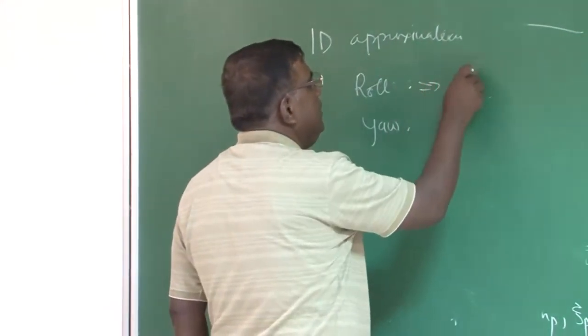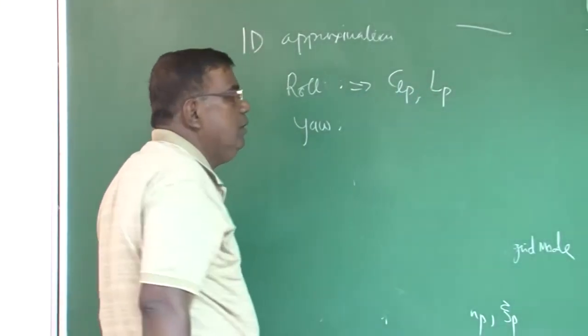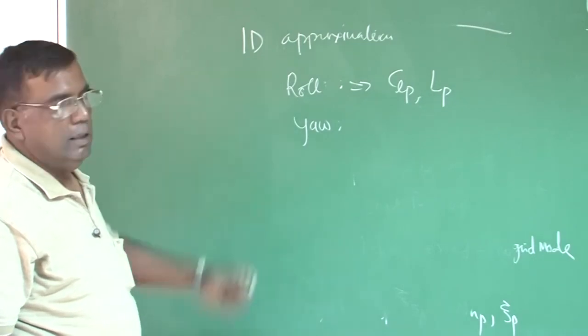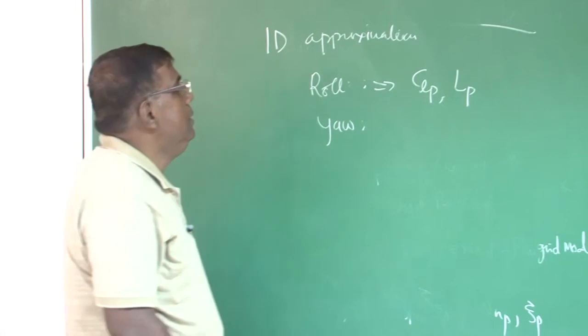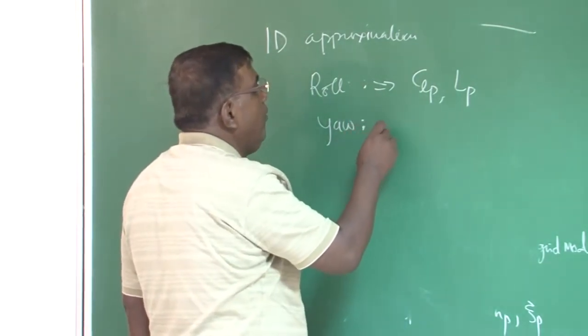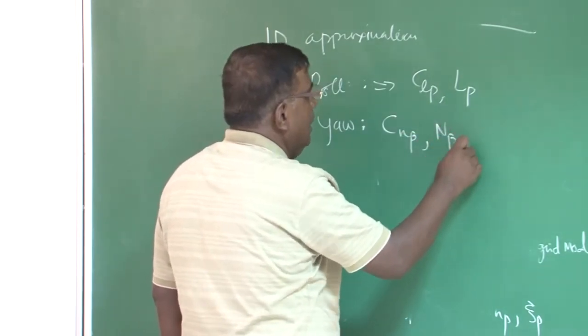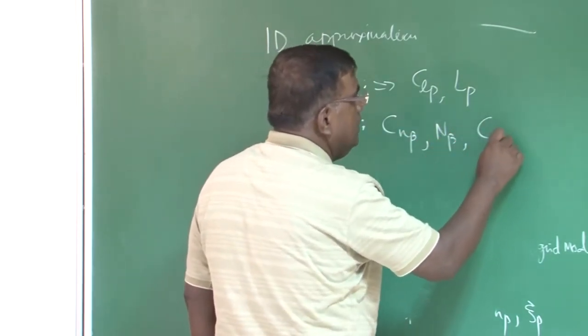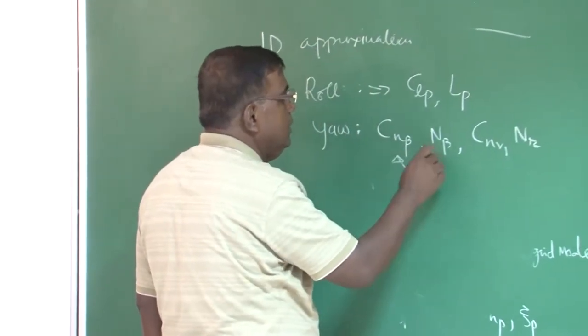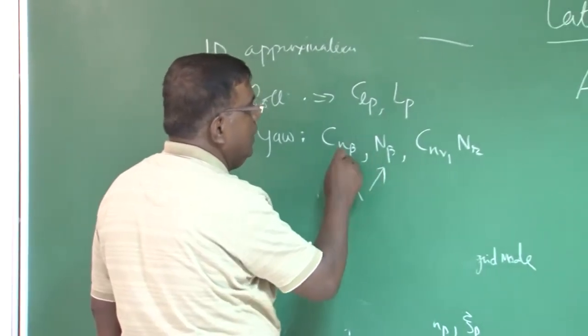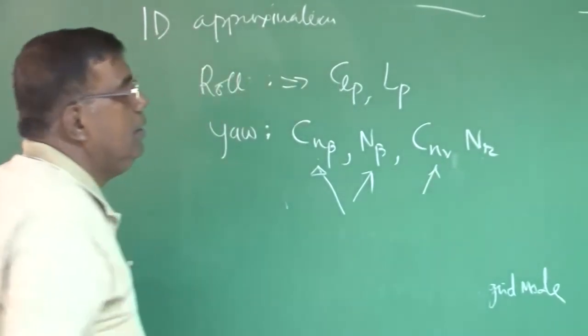And here, we identified the parameter C_Lp or dimensional Lp, roll damping parameter, which will decide the characteristic of bank buildup or rate buildup. And here, we identified C_n_beta or N_beta and C_n_r or N_r. So this is the stiffness part, non-dimensional and dimensional. This is the damping part, non-dimensional and dimensional.